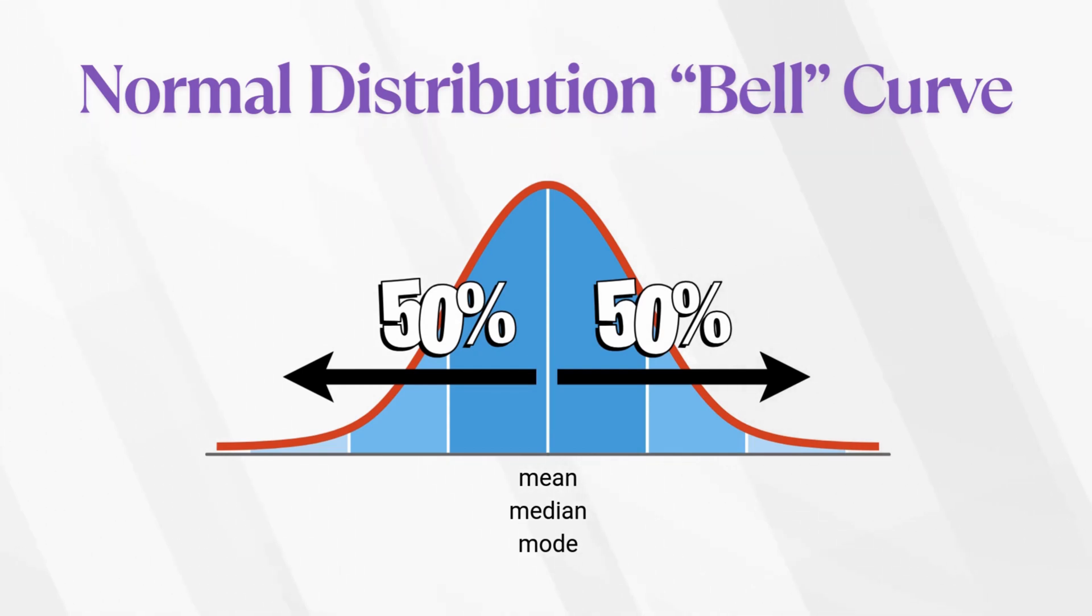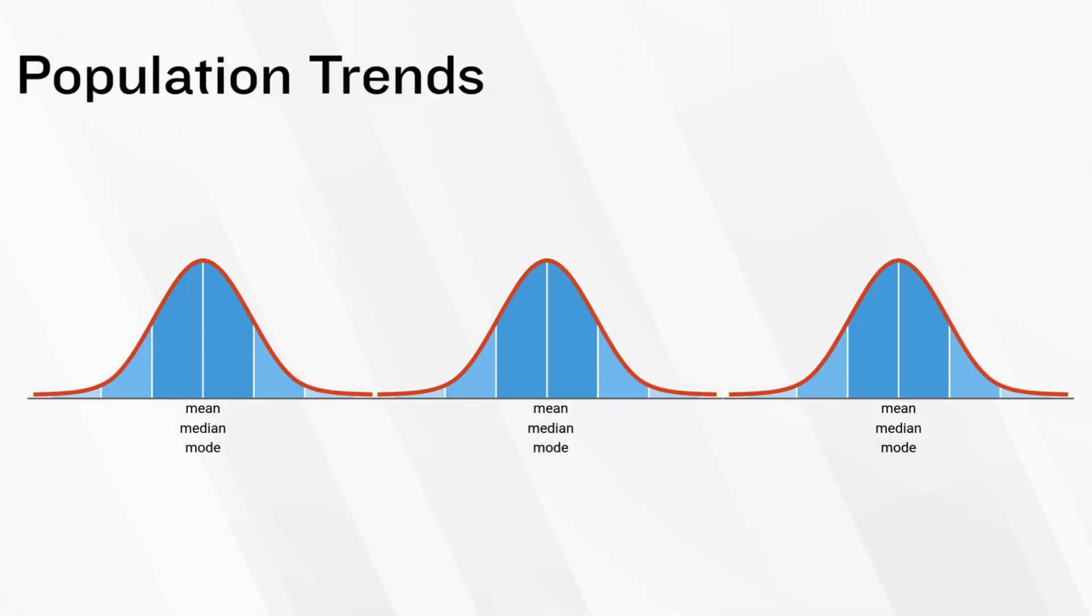In a normal distribution, the mean, median, and mode are all the same value. It's the statistical equivalent of everyone actually agreeing on something. Most scores fall near the middle, and fewer appear on the extremes. A lot of traits in a population follow this bell-shaped curve. Things like height, weight, intelligence, and so on. Most people cluster around the average, and only a few are out there in the super short or mad genius zones.